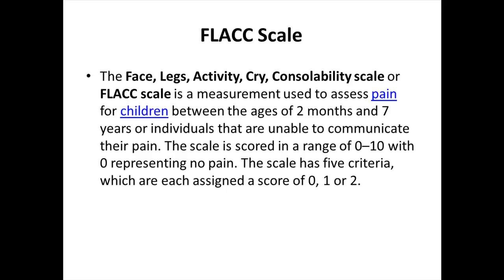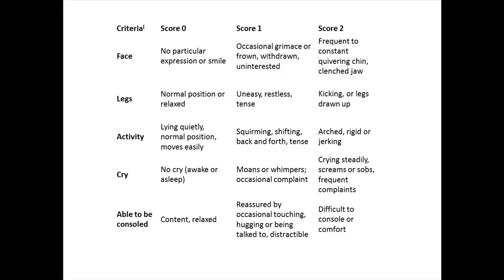There are several scales that may be used to determine a child's level of pain. The Face, Legs, Activity, Cry, and Consolability scale, or the FLACC scale, is a measurement used to assess pain for children between the ages of two months and seven years, or individuals who are unable to communicate their pain. The scale is scored in a range of zero to ten, with zero representing no pain. The scale has five criteria, each assigned a score of zero, one, or two. This slide shows the five criteria: facial expression, leg movement, activity level, amount of crying, and consolability, as well as the scoring for each criterion.